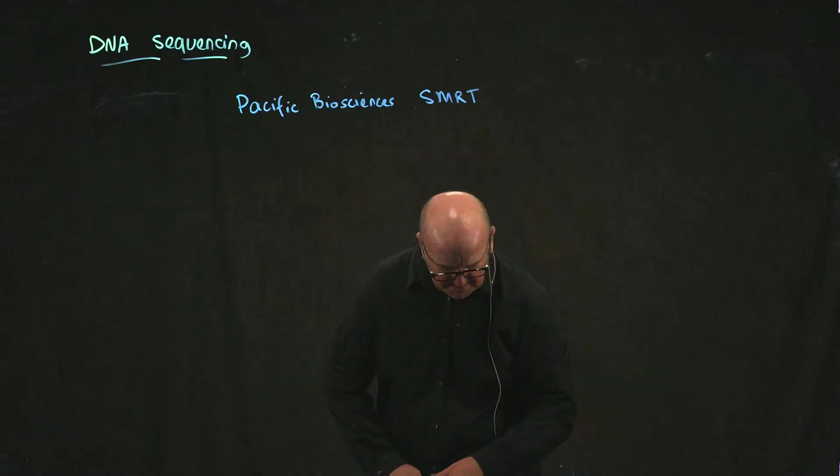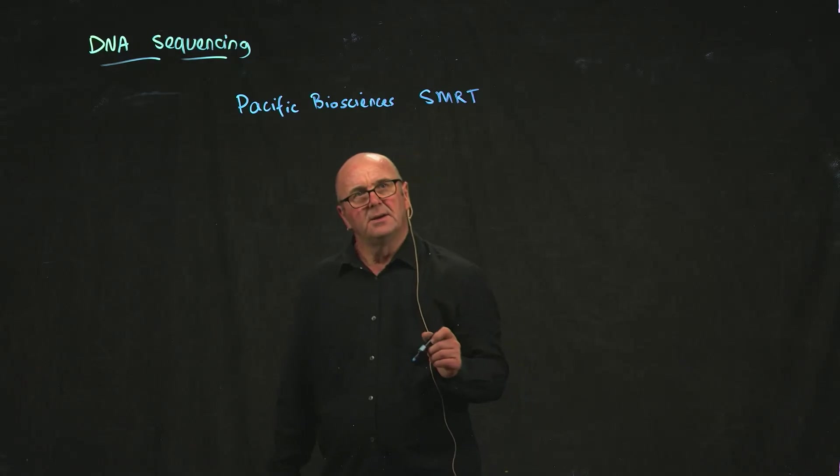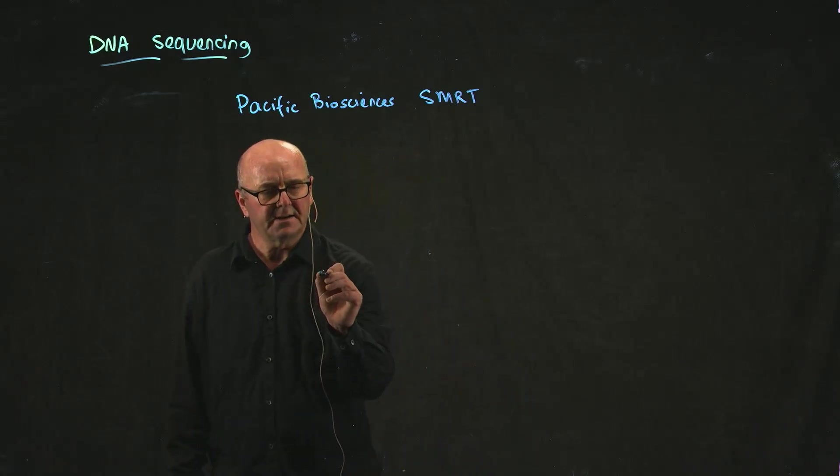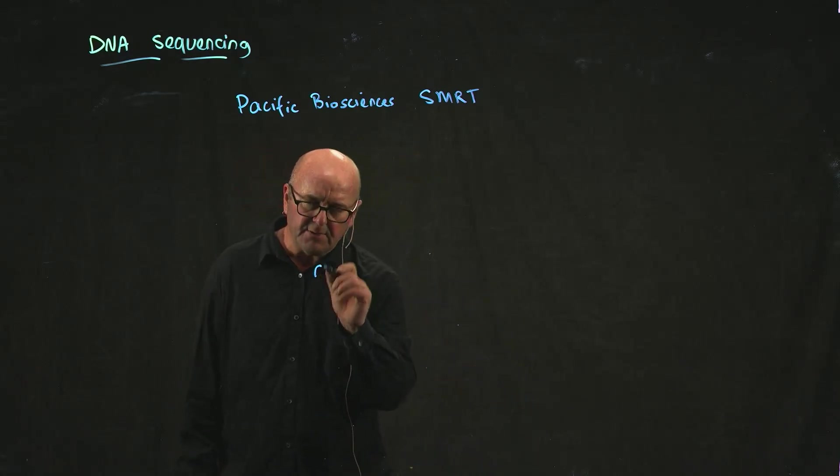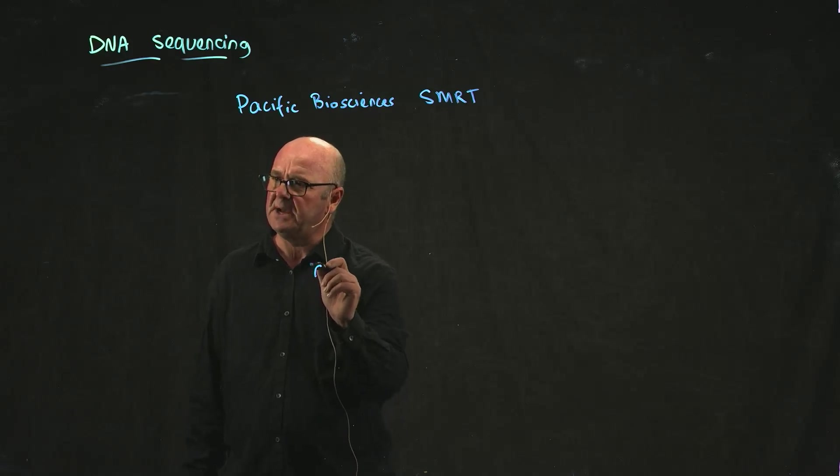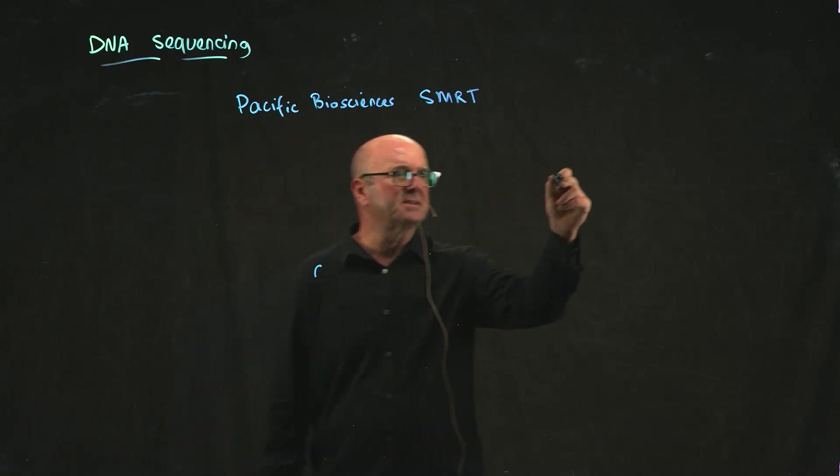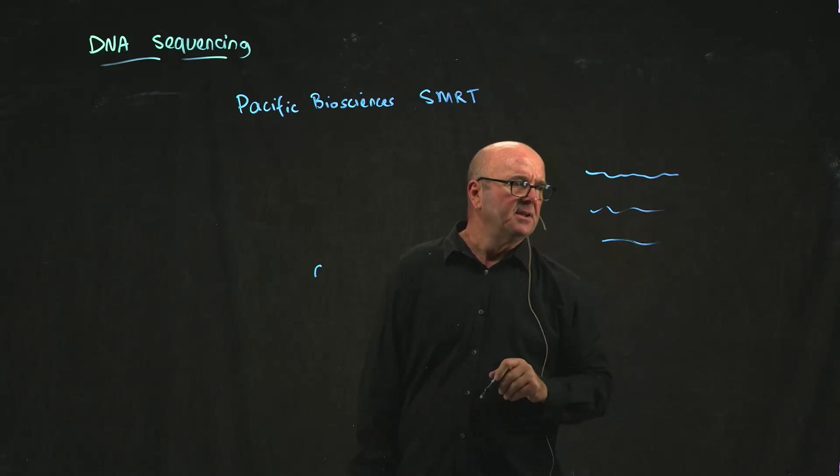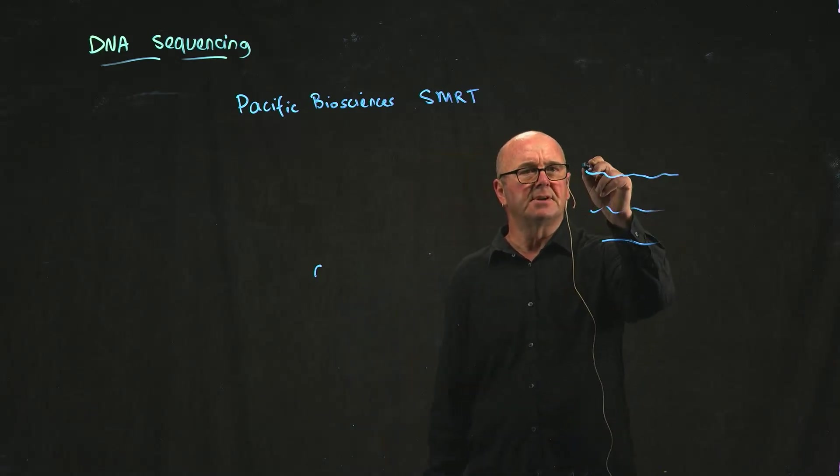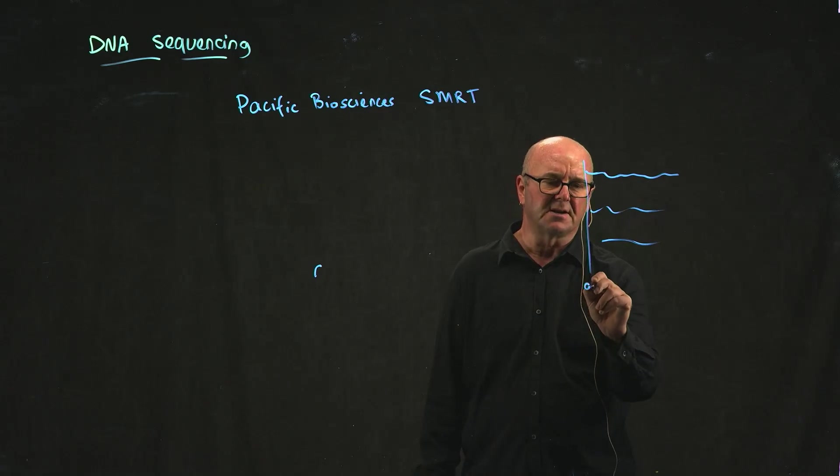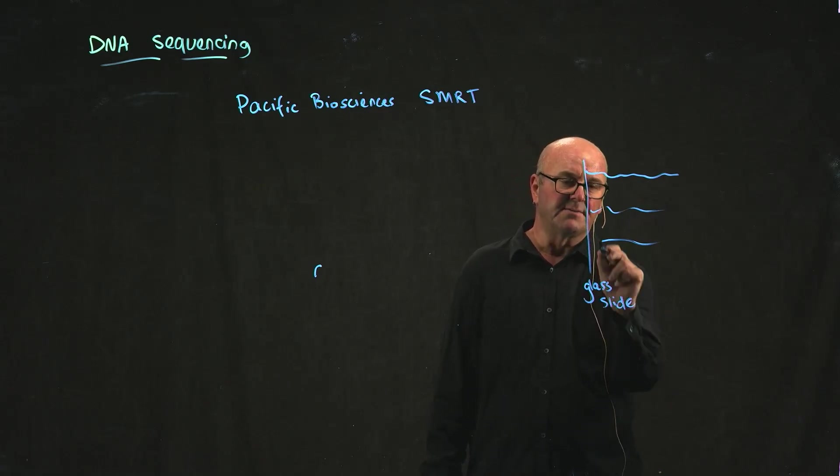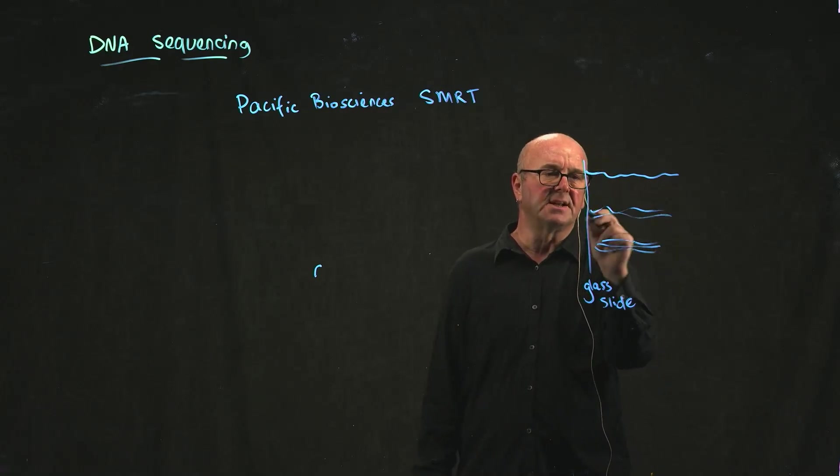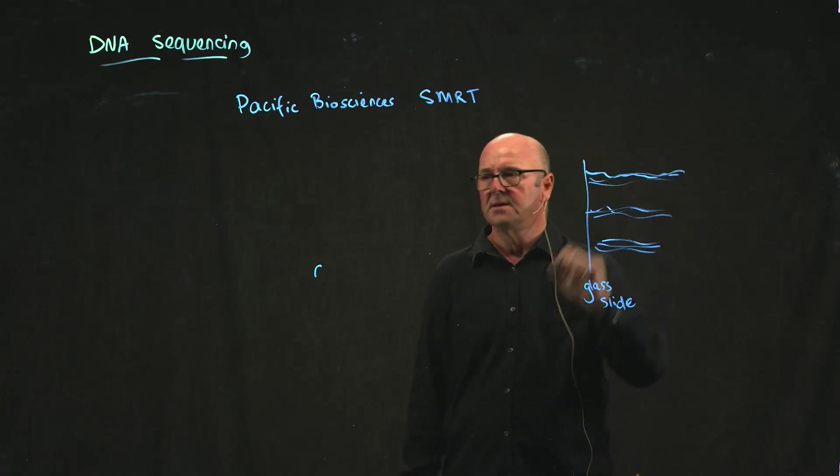The way that this works is you take - so in all of the other sequencing that I've talked about, you have a piece of DNA that's floating around, in fact multiple pieces of DNA. It's either floating around, or you attach the piece of DNA, say, to a glass slide like you do in Illumina. So with Illumina, you have a glass slide where you have lots of pieces of DNA that are attached.